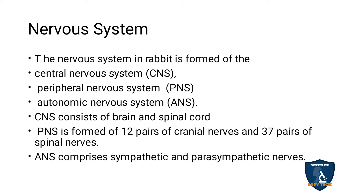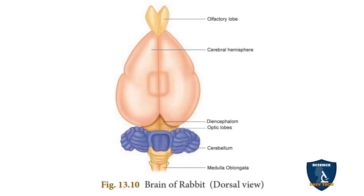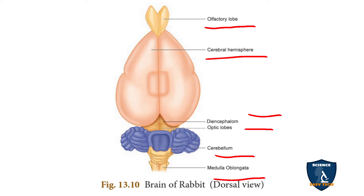So the nervous system of rabbit is formed of three: central nervous system, peripheral nervous system, and autonomic nervous system. The central nervous system has brain and spinal cord; the peripheral nervous system has 12 pairs of cranial nerves and 37 pairs of spinal nerves; and the ANS comprises of sympathetic and parasympathetic nerves. This is the structure of the brain — the brain has olfactory lobes responsible for smell, cerebral hemispheres, diencephalon, optic lobes, cerebellum, and medulla oblongata. The brain is covered by three layers.